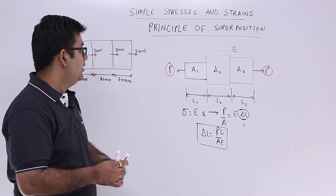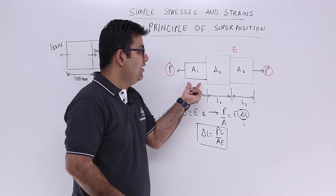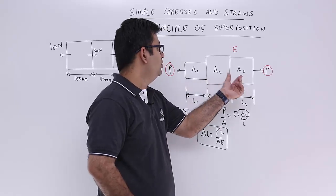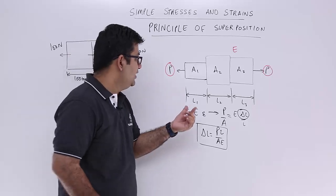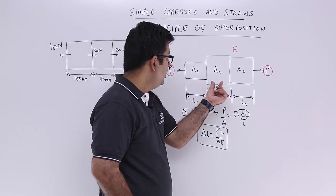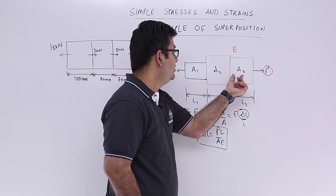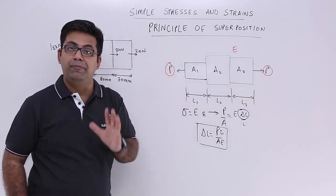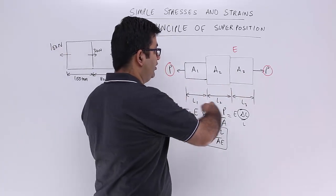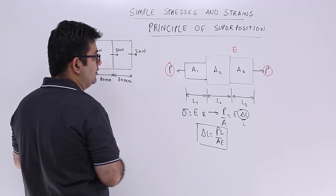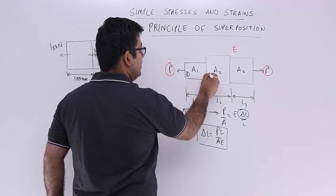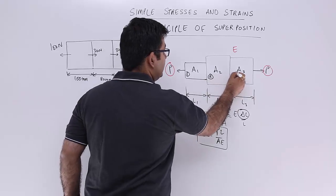This means P is acting on area A1, it is acting on area A2 and it is also acting on area A3. So elongation in this section plus the elongation in this section plus the elongation in this section would be the total elongation for the entire body. So the elongation in section 1, this is section 2 and this is section 3.